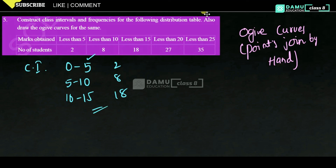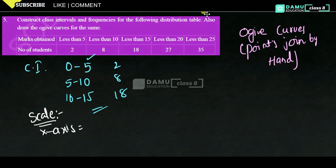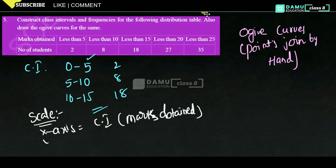Now for the scale: the x-axis will represent marks obtained, that is the class intervals. The y-axis — one centimeter will be equal to 10 — represents the number of students, that is cumulative frequencies.